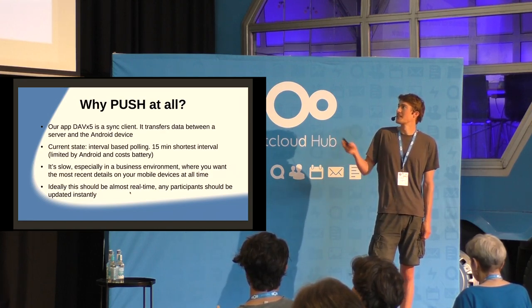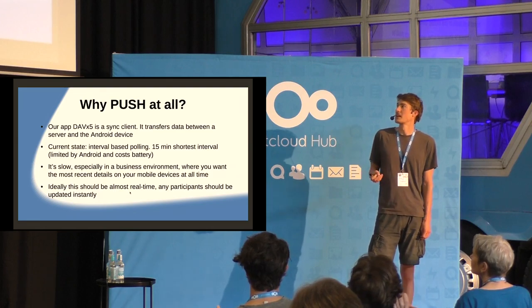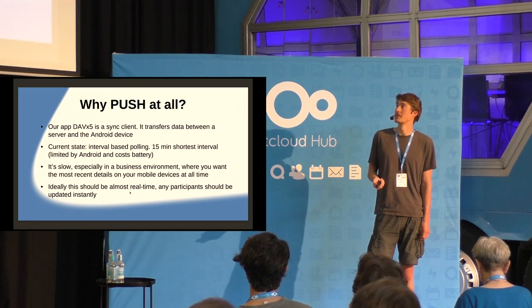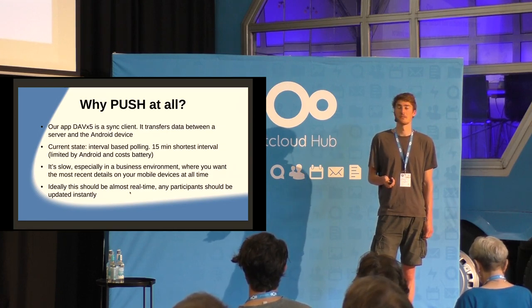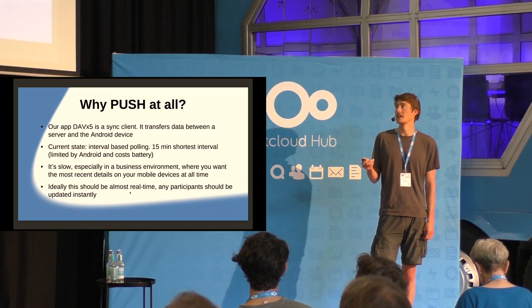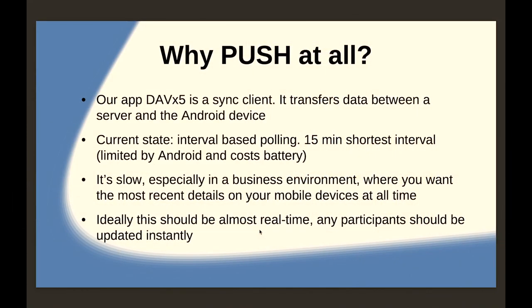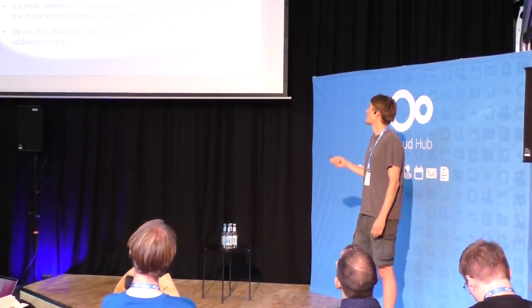We really want real-time updates, and we also want to avoid the battery costs. We will have a problem if we just ask the server. Polling is asking the server: did something change? If it didn't, we wasted some battery. You can poll more often and make the interval shorter, but then we just waste more energy if no updates were actually made on the server side.